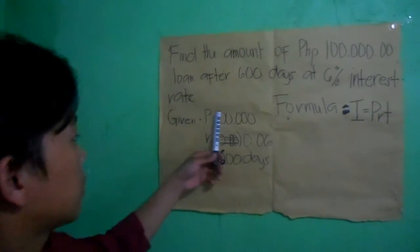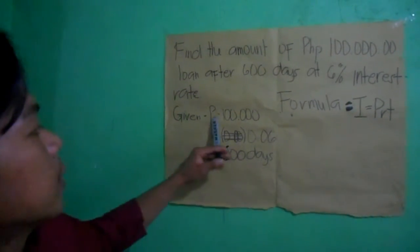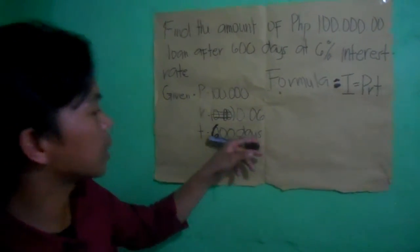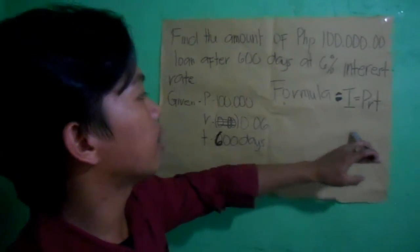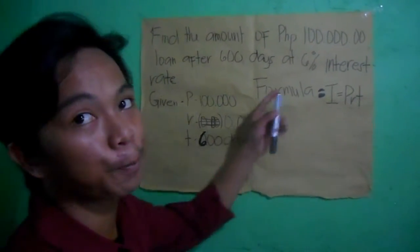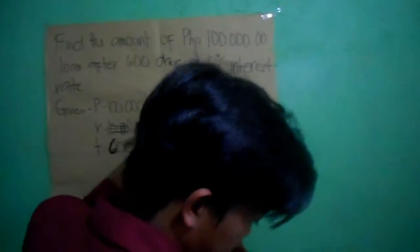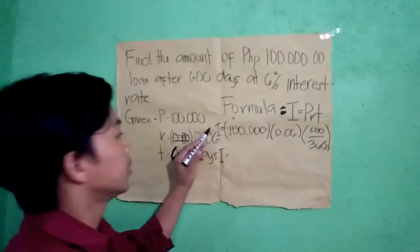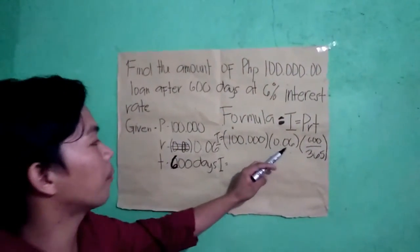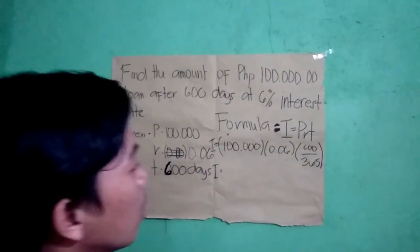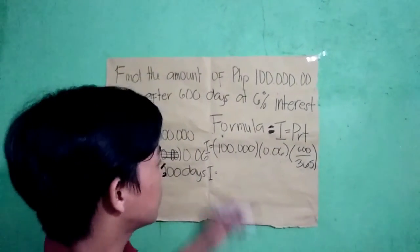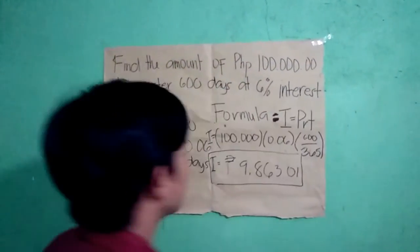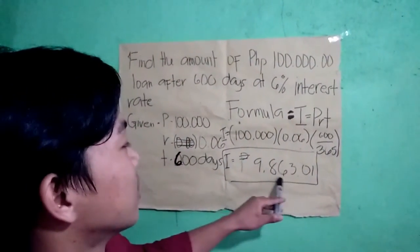Fifth problem: With a principal and 6% interest rate, the solution is 100,000 times 0.06 times 600 over 65. Dividing and multiplying gives the answer of 9,863.01.